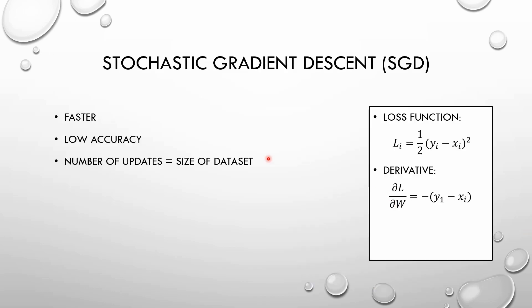First of all we are going to talk about the stochastic gradient descent. The stochastic gradient descent turns out to be faster than the batch, so it is widely used. However, it has a low accuracy and you need to make more iterations to get to the minimum. You need to update it every time you look through the dataset.